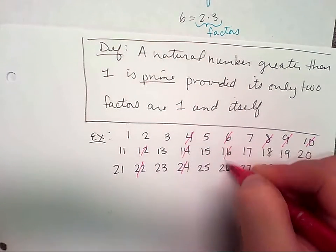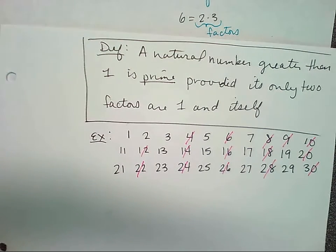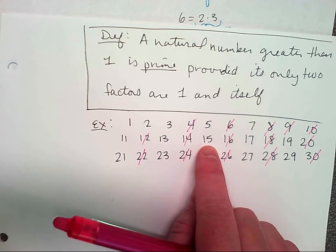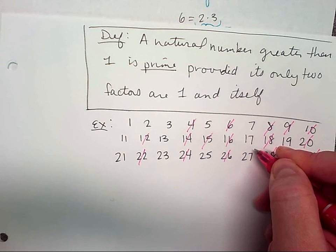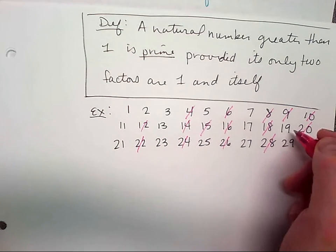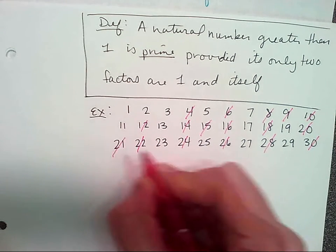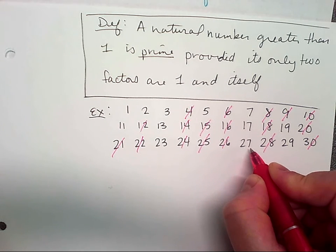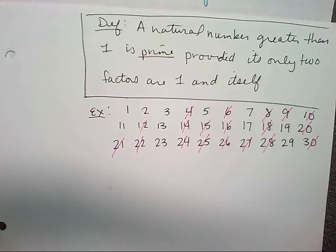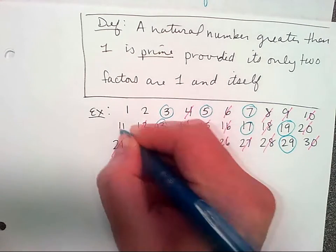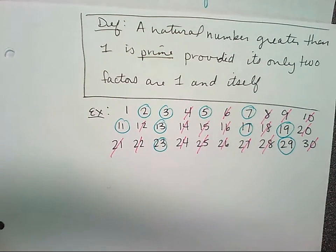Let's cross out the evens because they're all divisible by two. Eleven — yes. Thirteen — yes. Fifteen — no, because three times five. Seventeen — yes. Nineteen — yes. Twenty-one — no. Twenty-three — yes. Twenty-five — no. Twenty-seven — no. Let's circle what we have left — these are all the primes. A natural number greater than one is prime, so one is not prime.